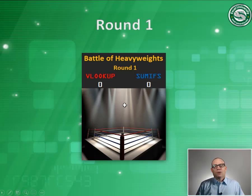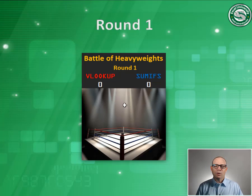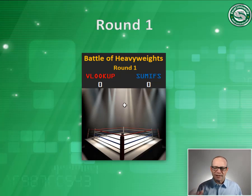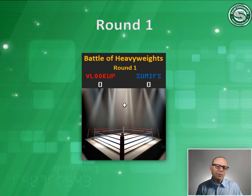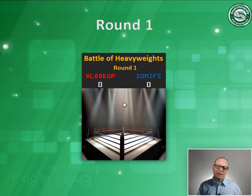The way we're going to score this entire series is with a standard boxing 10-point system. The winner of the round gets 10 points, and the function that did not win the round gets nine points, unless they're knocked out — then they get eight points. In other words, if they can still do that task, maybe with the help of a helper function, they get nine points; otherwise, if they're knocked out, they get eight.